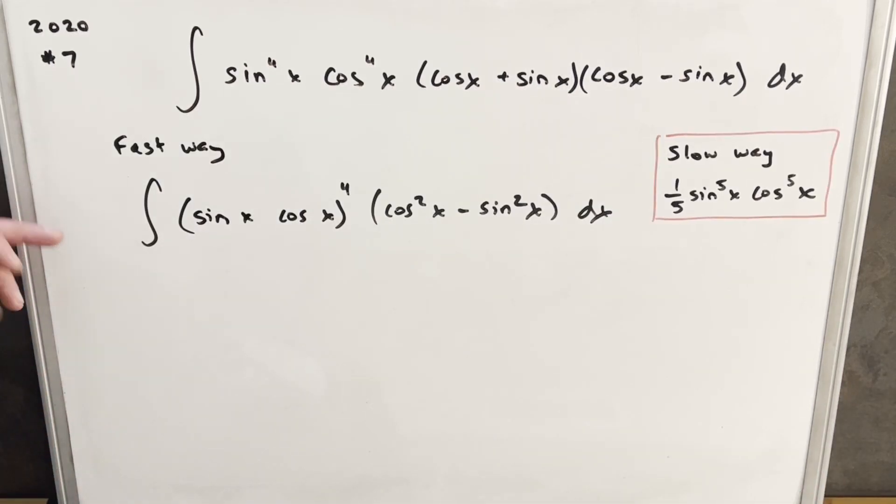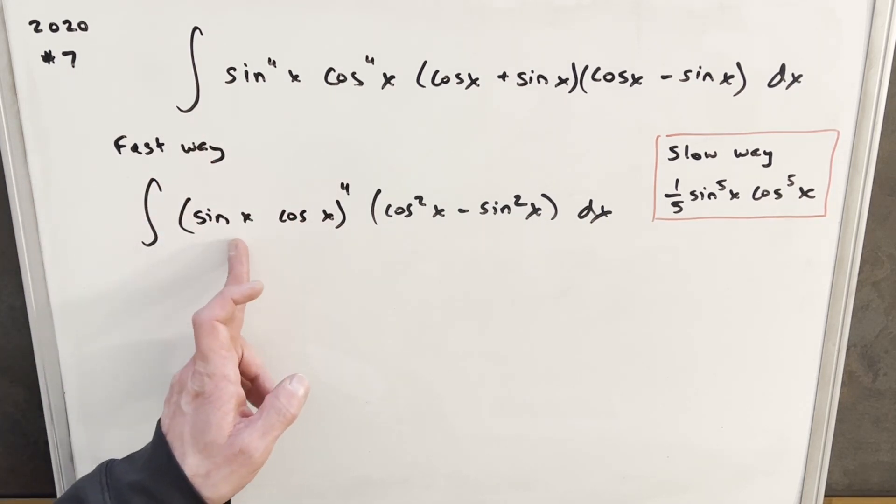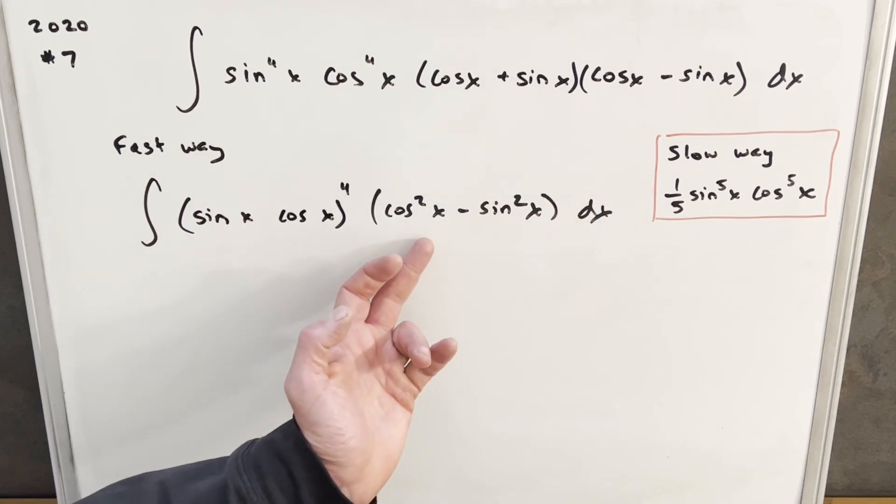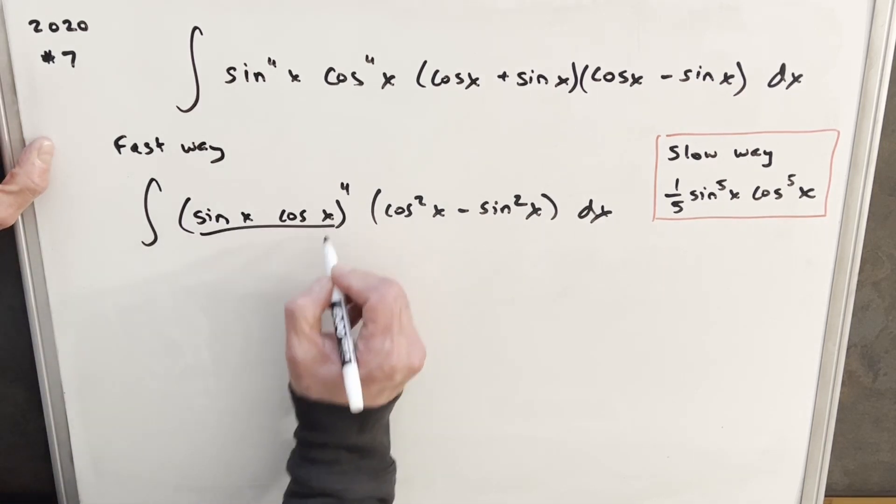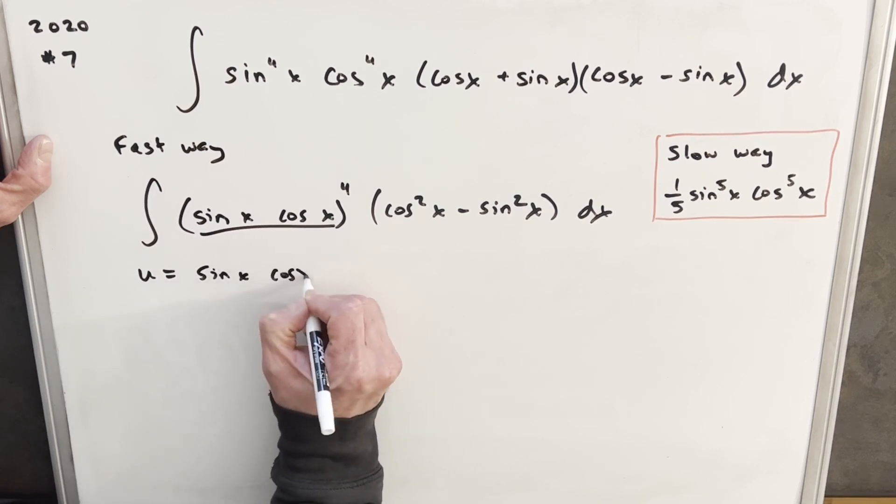Okay. Now for the fast way, what I've done is we've written this to set it up a little nicer for this fast way. But all I've done is taken the fourth, written this as sine x cos x to the fourth, all to the fourth, and just distribute this. But we saw this in the first method. This is cosine squared x minus sine squared x. And from here, we're going to just do a u substitution for sine x cos x.